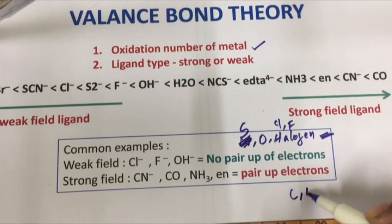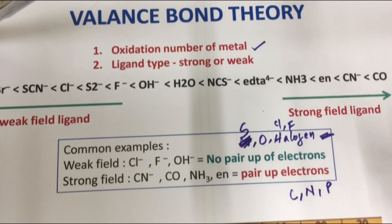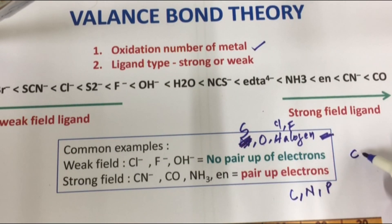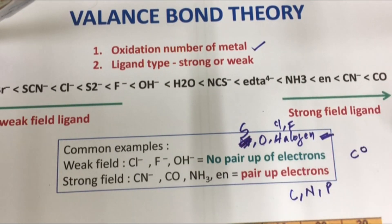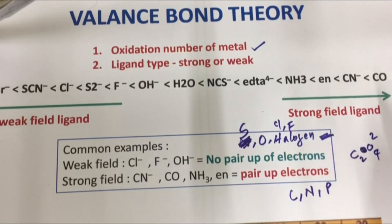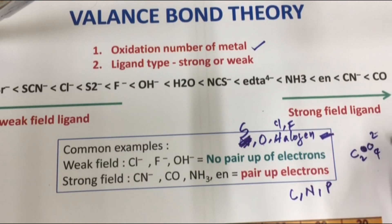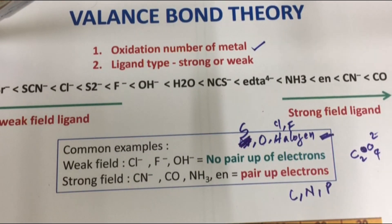For the strong field, the donor atom is carbon, nitrogen, or phosphorus. Oxalate is C₂O₄²⁻. If we look at oxalate, it is a weak field ligand.